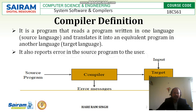One of the different processors is the compiler. According to the definition of the compiler, it is a program that reads a program written in one language — called the source language — and translates it into an equivalent program in another language — called the target language.